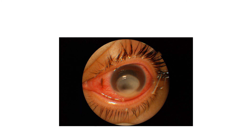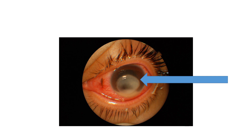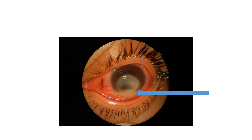Here is another example of a contact lens-related problem. This whitish area on the cornea represents a corneal ulcer — an infectious cause often caused by bacteria, particularly Pseudomonas. This has also caused inflammation in the anterior chamber. When inflammation in the anterior chamber becomes very severe, it can cause a hypopyon, as we see here. This needs immediate treatment.